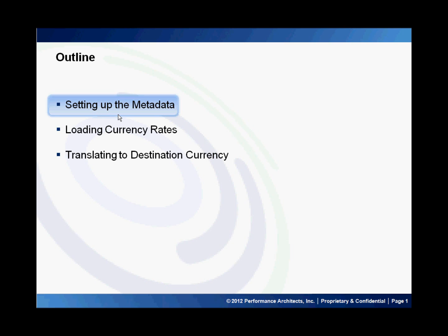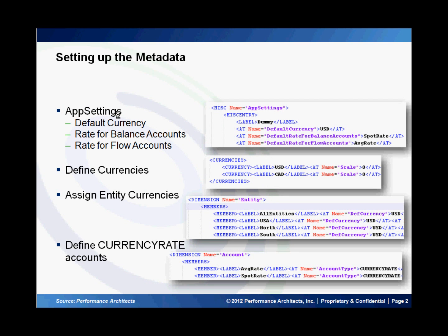To set up currency conversion we first need to set up the metadata for the application. If we look at the parts of the metadata file, we first see the app settings section where we need to define the default currency to be used in the application, as well as select two members for the account dimension that will hold the default rate for the balance accounts and the default rate for the flow accounts.